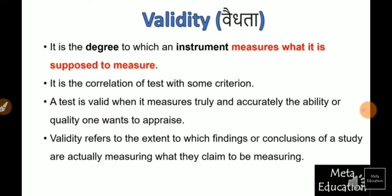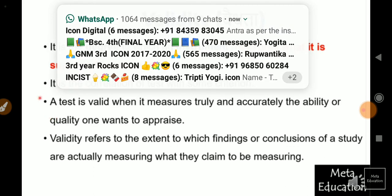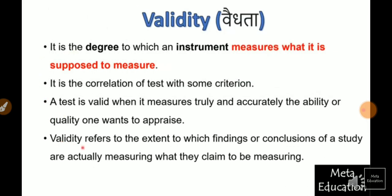Validity refers to the extent to which findings or conclusions of a study are actually measuring what they claim to be measuring. The three definitions were mainly related to any tool or instrument, but validity also applies to research. If we talk about the research context, we will talk about the findings and conclusions, and whether they are actually measuring what they claim to be measuring.